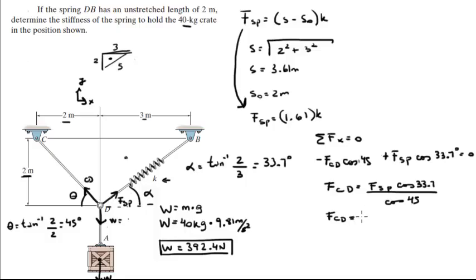That equals 1.89 K. How did I do that? I plugged in 1.61 for the spring force and got F_CD in terms of K, the stiffness of the spring. This is one of our formulas.